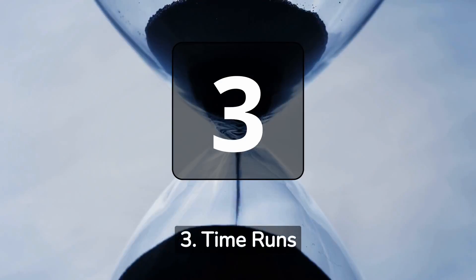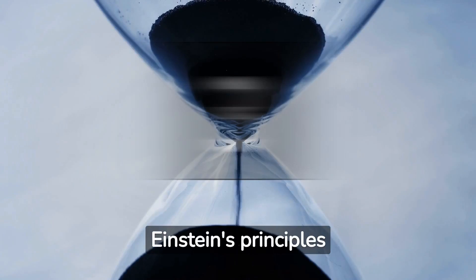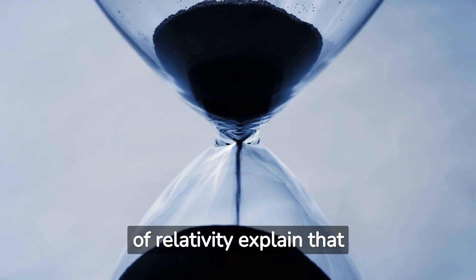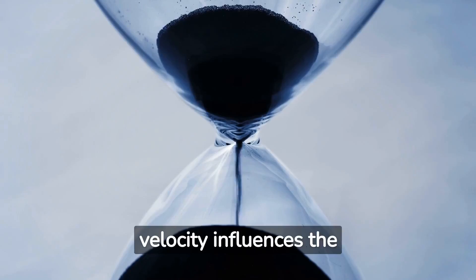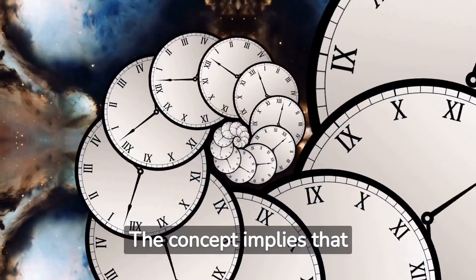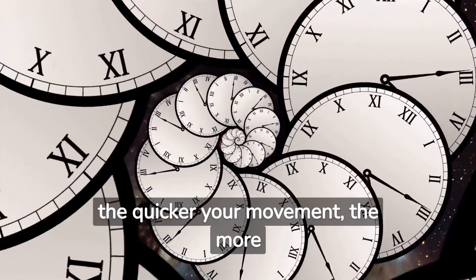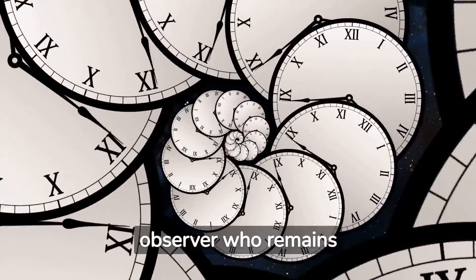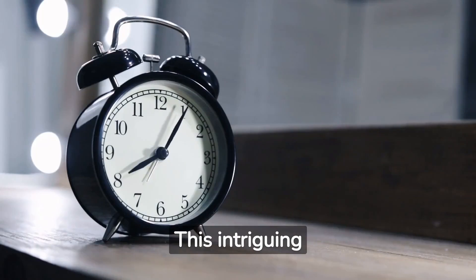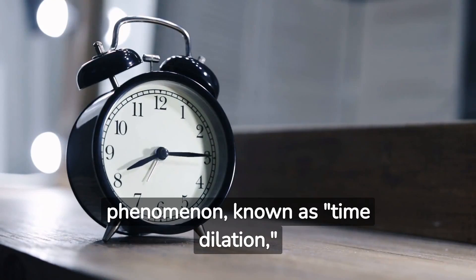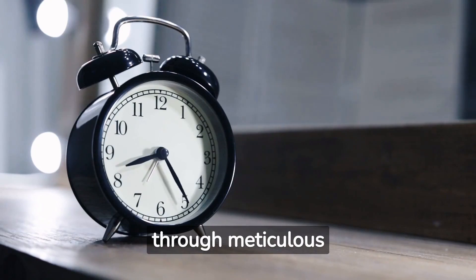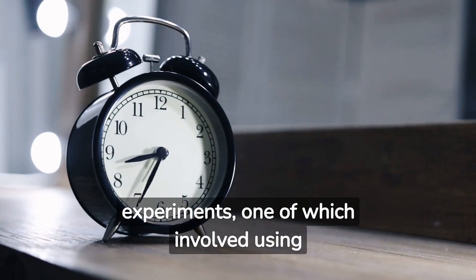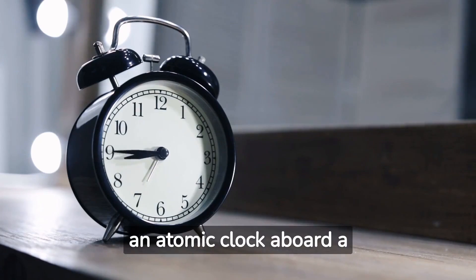Number 3: Time runs slower in space. Einstein's principles of relativity explain that velocity influences the flow of time. The concept implies that the quicker your movement, the more sluggish time appears to pass for you in comparison to an observer who remains stationary. This intriguing phenomenon, known as time dilation, has been substantiated through meticulous experiments, one of which involved using an atomic clock aboard a jet aircraft.